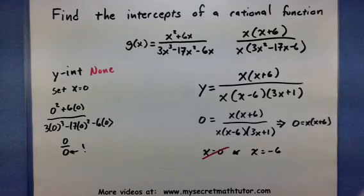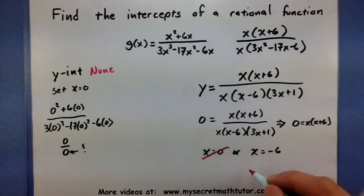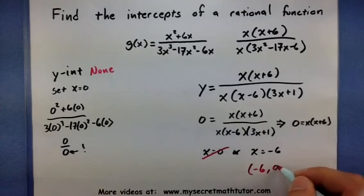So we can call our x intercept, negative 6, 0.